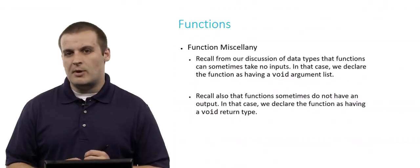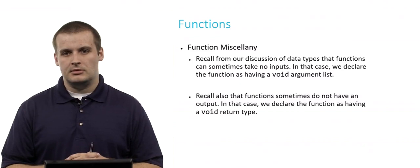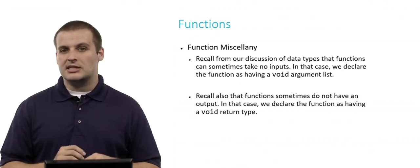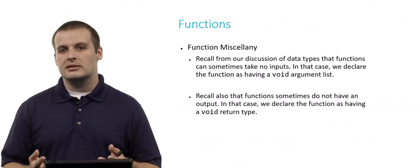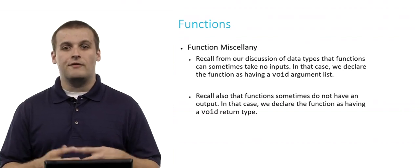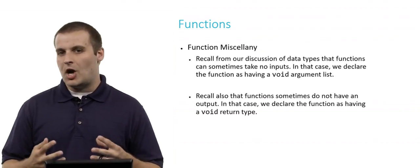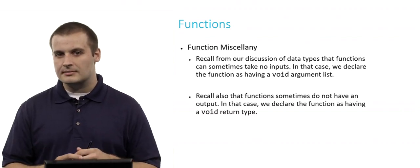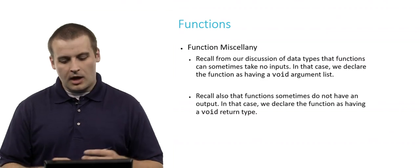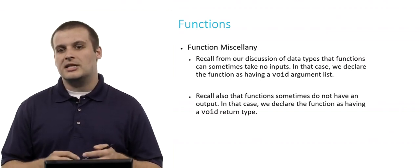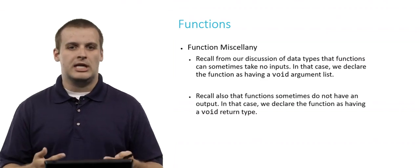A couple of miscellaneous points about functions before we conclude this section. Recall that functions can sometimes take no inputs — if that's the case, we declare the function as having a void argument list. The most common function we've seen so far that takes a void argument list is main. Also, functions sometimes don't have an output — in that case, we declare the function as having a void return type.